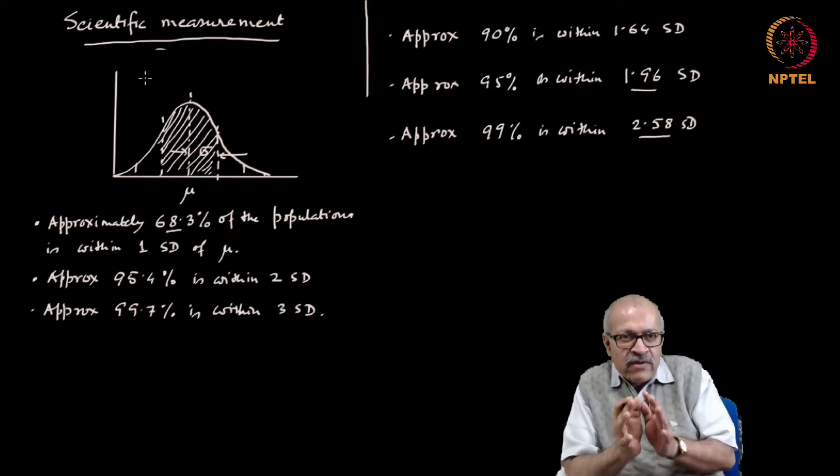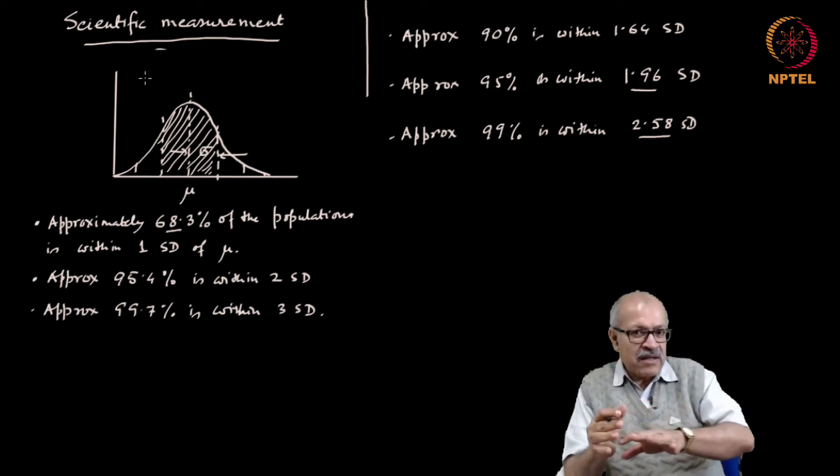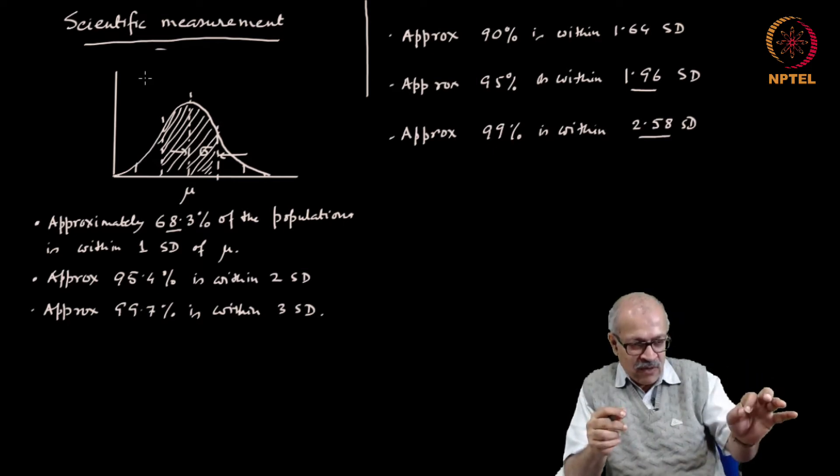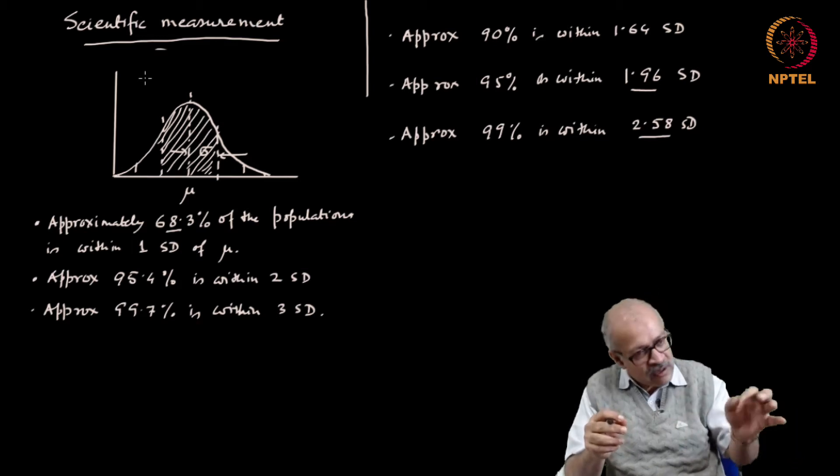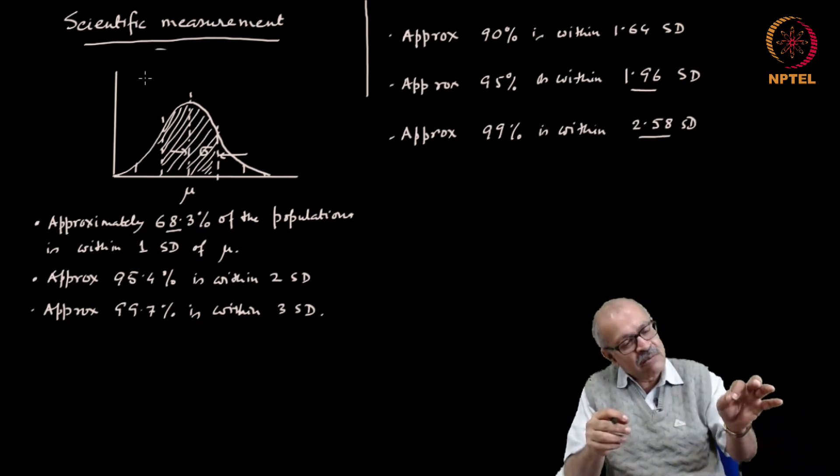Now whenever we have a situation, situation number one: we are trying to measure the mass of an electron. We know from theory that all electrons have the same mass and therefore we are trying to measure a constant.